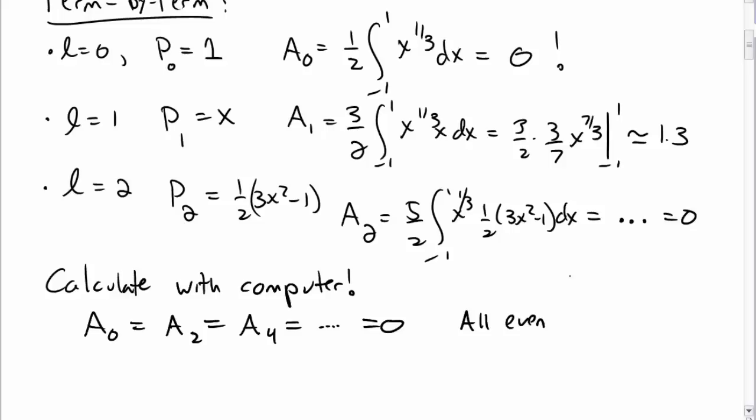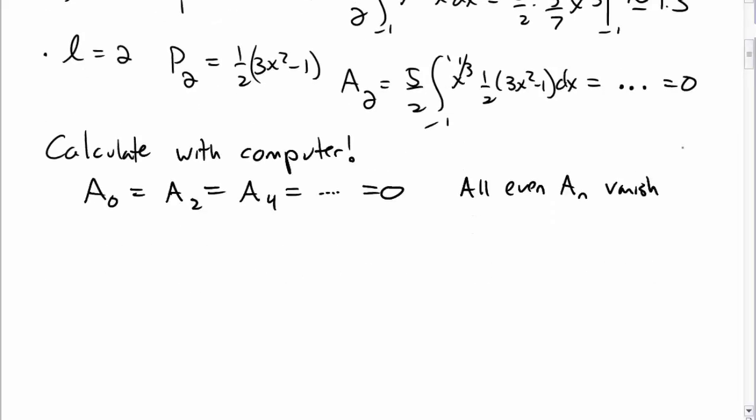And actually that makes a lot of sense if you think about it. So our function x to the 1/3rd is odd across the axis, across the y axis. But the P sub l's where l is even are even functions. And so certainly we shouldn't be able to expand our odd function into even functions. So it's the same thing as with a Fourier series. You expect all those to vanish.